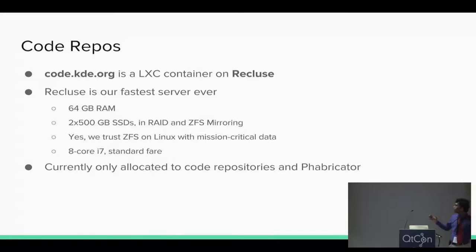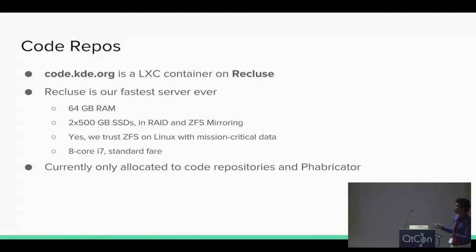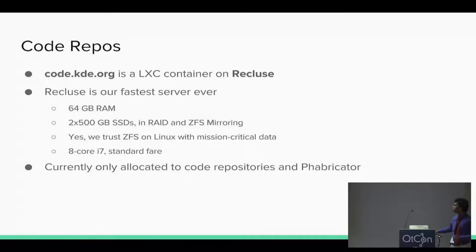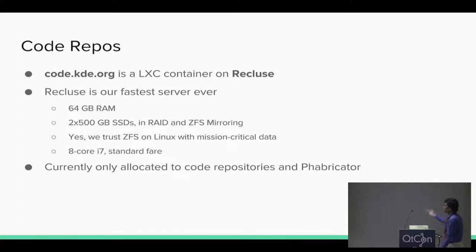This is actually our most powerful server ever, just purchased this year. It's called Recluse, rented from Hetzner. It has 64 GB of RAM and two 500 GB SSDs that are mirrored. We trust ZFS on Linux with mission-critical data. ZFS came out with OpenSolaris and was adopted by FreeBSD; Lawrence Livermore National Laboratory has been running a project to port ZFS to Linux. ZFS has built-in mirroring and RAID features, so we feel safer with ZFS on Linux than with a solution based around MD, LVM, and ext4.